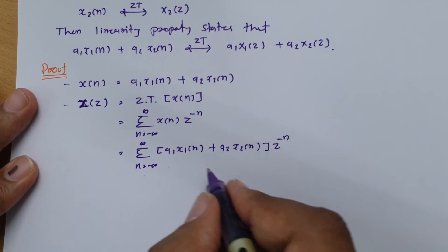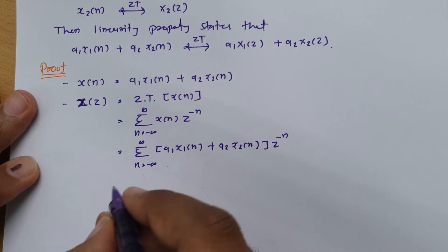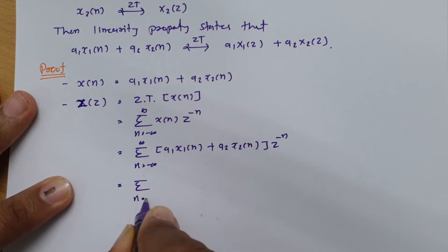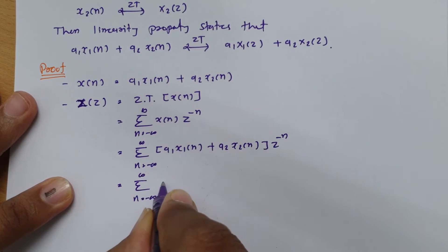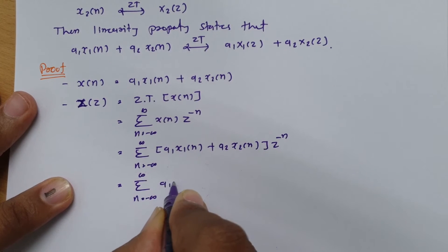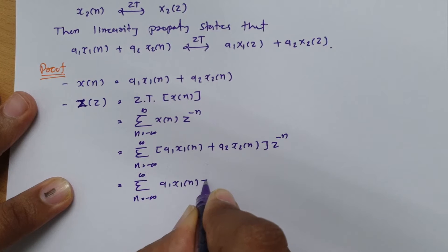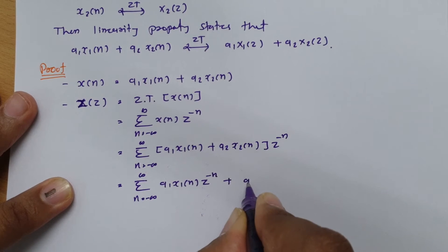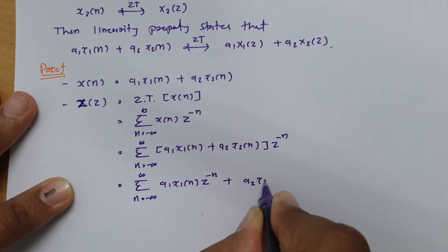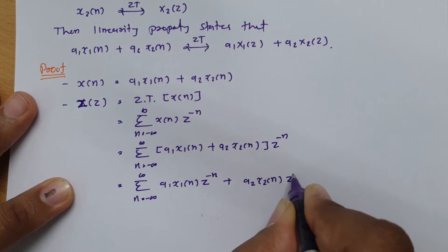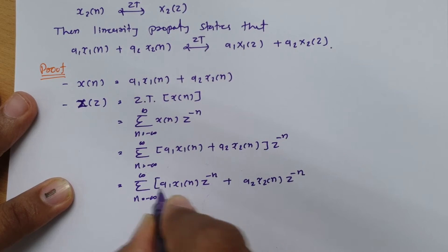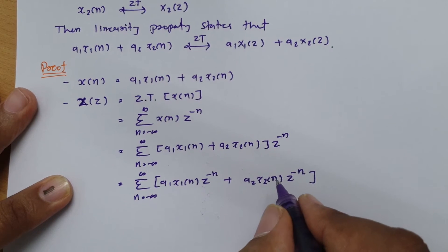Now we can separate out these two terms. Separating them gives: summation from n = −∞ to +∞ of a1·x1(n)·z^(−n), plus summation from n = −∞ to +∞ of a2·x2(n)·z^(−n).